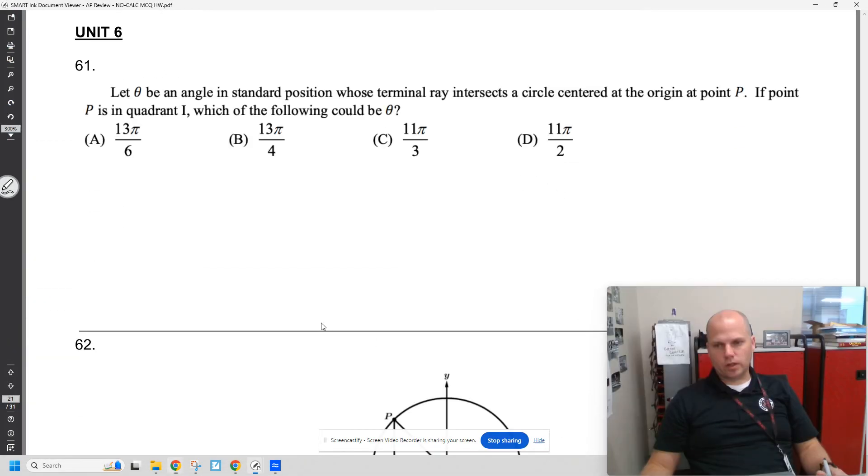Unit six was the unit circle, SOHCAHTOA triangles. What do we remember? Pi over six is always 30 degrees away from the x-axis.